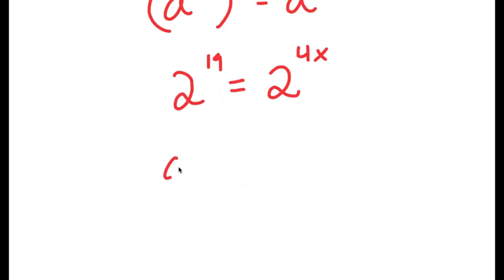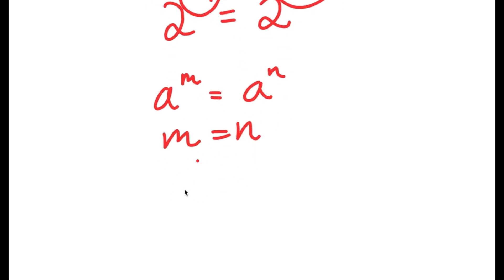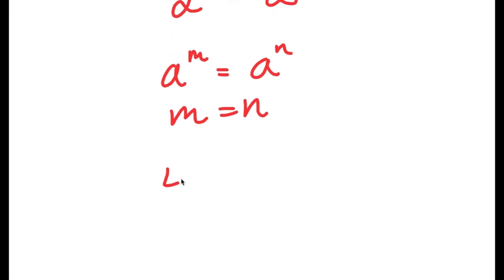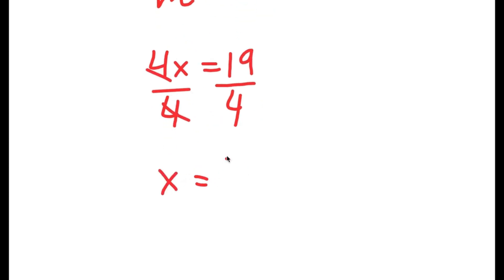Now, if I have something in the form a to the power of m is equal to a to the power of n, this means that m is equal to n. So in this case, 19 is equal to 4x. Now we have a simple equation here. All I have to do is divide both sides by 4 and I get x is equal to 19 over 4.